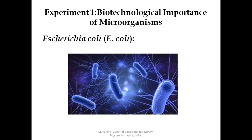E. coli can grow with or without oxygen. In the gut, it grows anaerobically in the absence of oxygen. However, unlike some anaerobic bacteria, E. coli also grows well in an aerobic environment, such as in a cultured conical flask under laboratory conditions. It grows fast under ideal conditions.